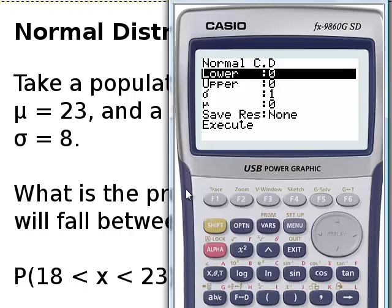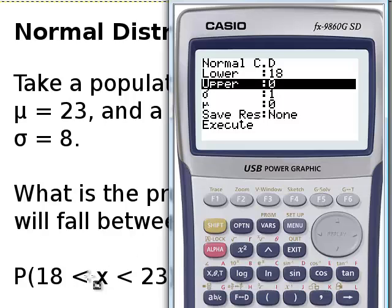The lower bound of our range, which is 18 in this case. The upper bound of our range, which is 23. So we're asking the calculator to find the probability between 18 and 23.